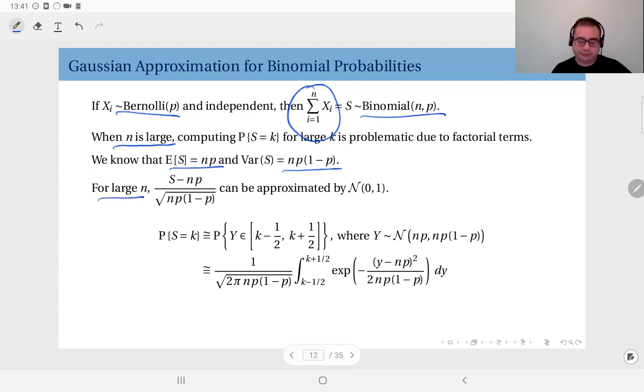Therefore for large n, if you standardize this, subtract the mean, divide by standard deviation, what you get is a standard Gaussian. So to obtain the probability of this binomial distribution being equal to k, you should just evaluate the Gaussian in this region.